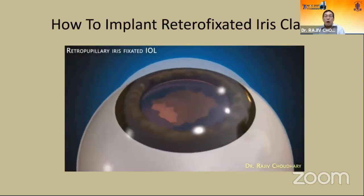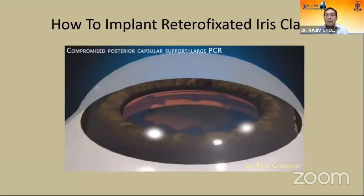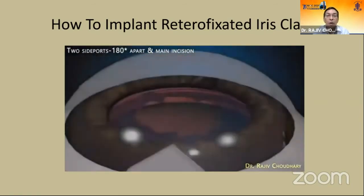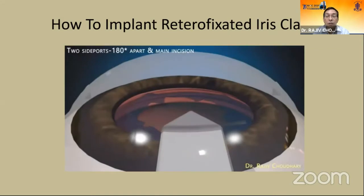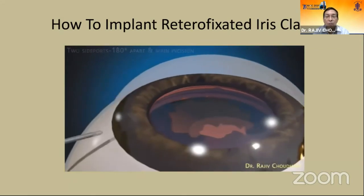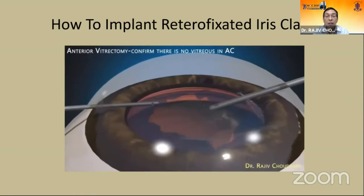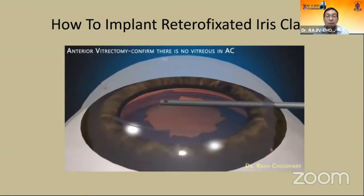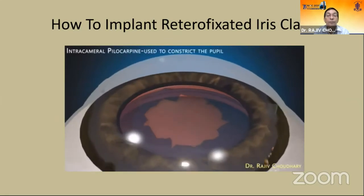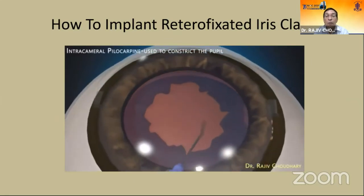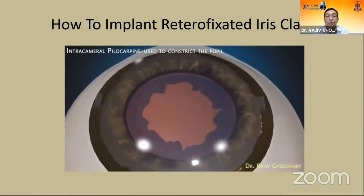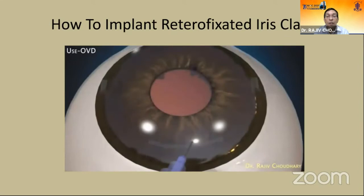This animation shows how you can implant it — it is simple. There is a two-sided port incision, 180 degrees apart, with a main incision of 4.5 to 5 mm length. Inject viscoelastic and perform a good anterior vitrectomy. Then put pilocarpine to constrict the pupil.